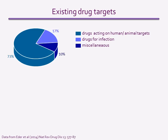Of course, not all drugs are aimed at a human target. Around 17% are aimed at infectious microbes — for example, antibiotics, anti-malarials and insecticides. For such drugs to be safe and effective, it is essential that they don't interact with human targets. The 10% of miscellaneous drugs includes things like antacids, which have a chemical target to neutralise pH in the stomach, or some laxative drugs, which interact with the contents of the gut rather than the gut itself.